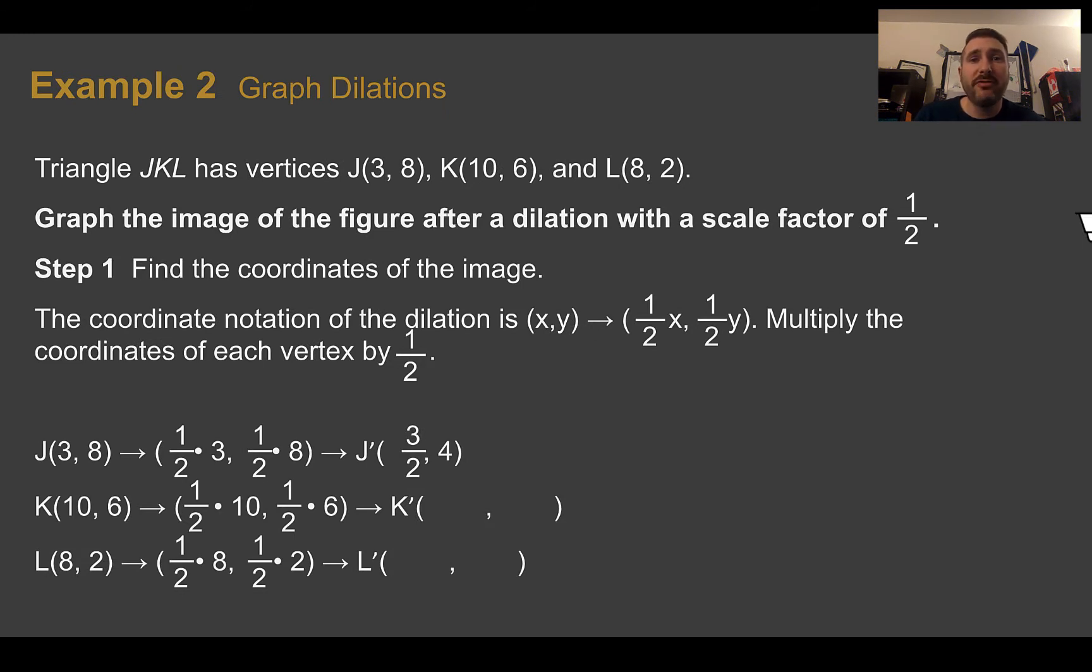Example 2, graph dilations. Triangle JKL has the vertices 3, 8, 10, 6, and 8, 2. We want to graph the image after dilation with a scale factor of 1 half. So because it says we have a scale factor of 1 half, I can tell right away that my image is going to be smaller than the pre-image. And I know this because the scale factor is a fraction between 0 and 1.